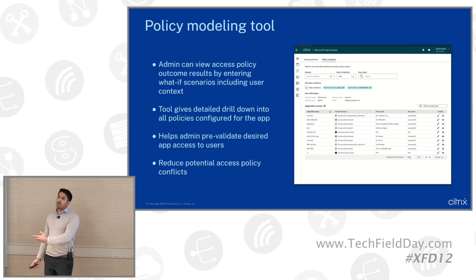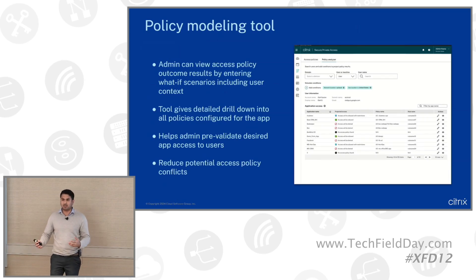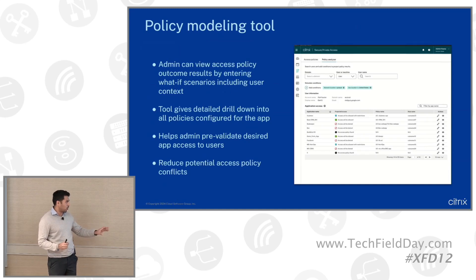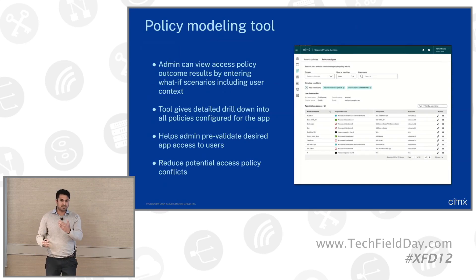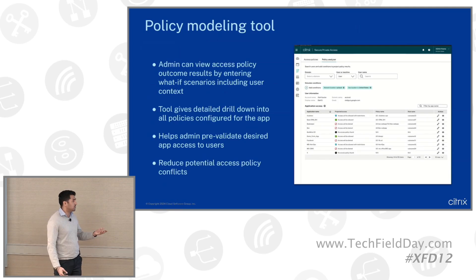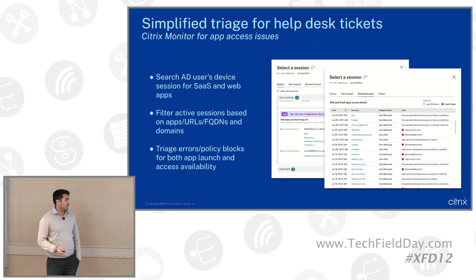Once you have created and configured these applications, enterprises often have so many applications and policies that it becomes difficult for admins to step into the shoes of the end user and know what access they're actually getting. We solve for that with a policy modeling tool — the admin can, from their desktop, see that a given user among 30 applications is getting access to 10, getting restricted access with DLP settings on another 10, and is blocked on the rest 10. It's a proactive approach so the admin can make changes before an access issue has happened.